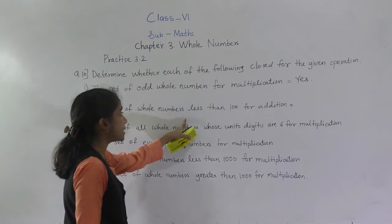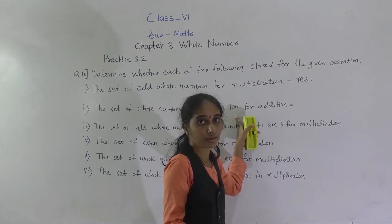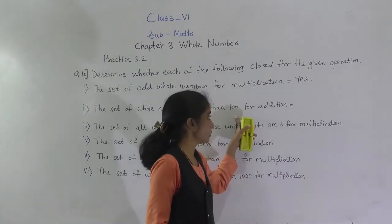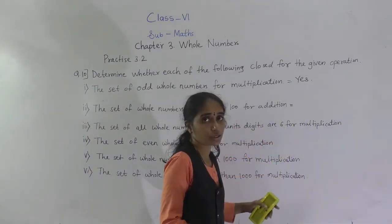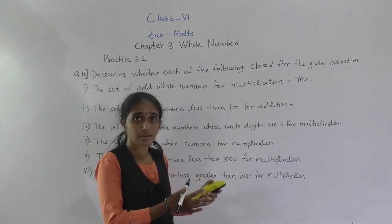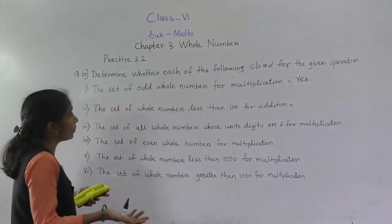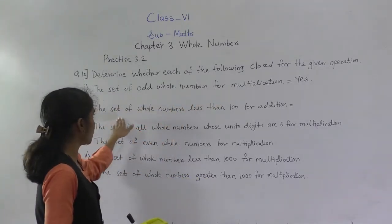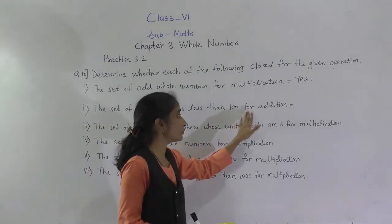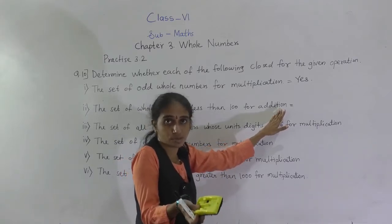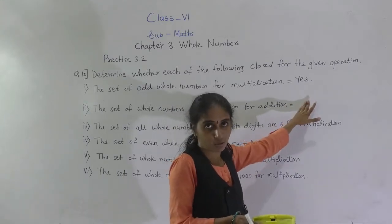Now, the set of whole numbers less than 100 for addition. Any numbers you take from the set of whole numbers less than 100 for addition — you are going to get a whole number, and that is closed for the given operation. Yes. Any number you take and write your answer.